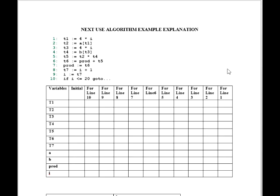Hello folks. In our compiler course there is an example named the Next Use Algorithm, and it is a bit confusing for many of us to understand. So in this segment I'm going to show an explanation approach for how to solve this. The main goal of this Next Use Algorithm example is to find out which variable is live and which variable is dead in which line.